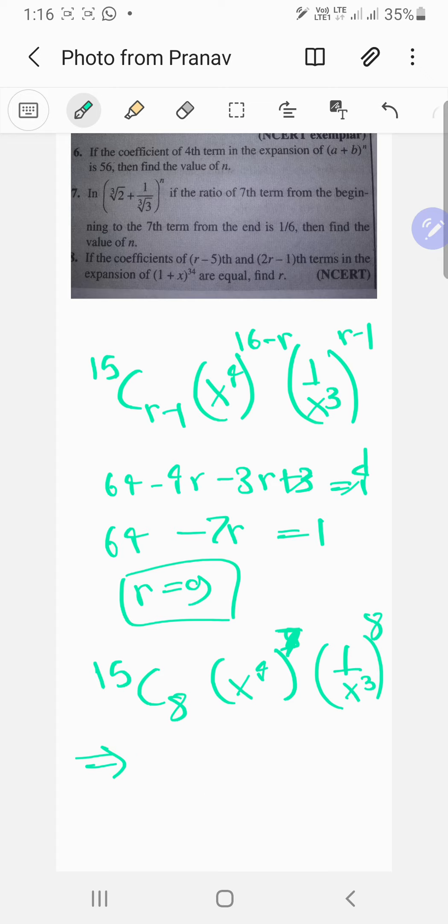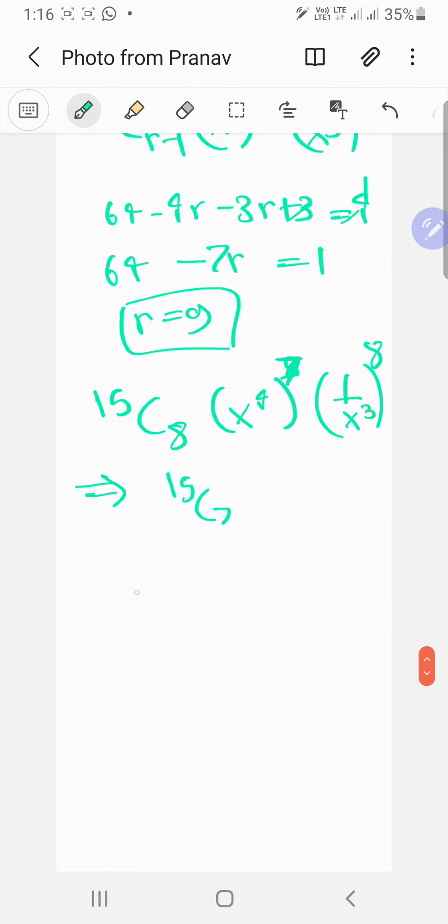Which is the same thing as 15 choose 7, which will be (15 × 14 × ... 12, 11). I want to write 7 terms over there. It's gonna take some space.